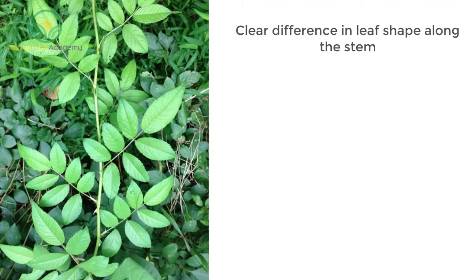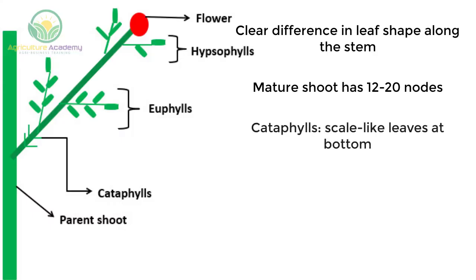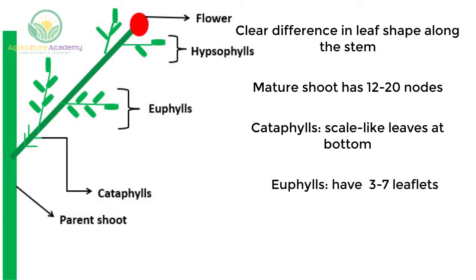The morphology of the rose shoot shows a clear difference in leaf shape. A mature rose shoot will have 12 to 20 nodes. Towards the bottom, there are scale-like leaves called cataphils. The following leaves have three to seven leaflets, called the euphils. The hypsophils are the two to three leaves below the flower bud.